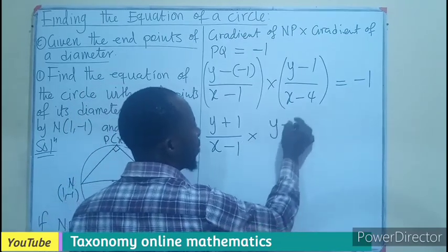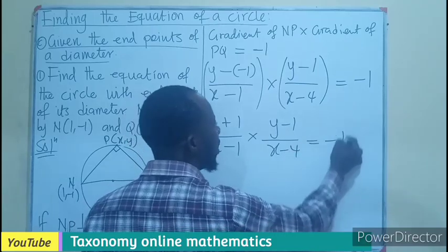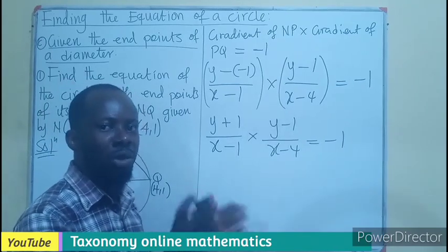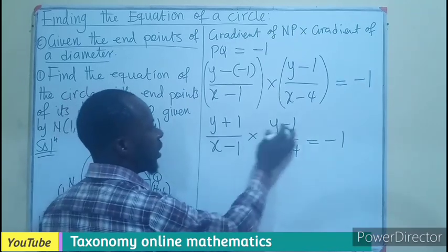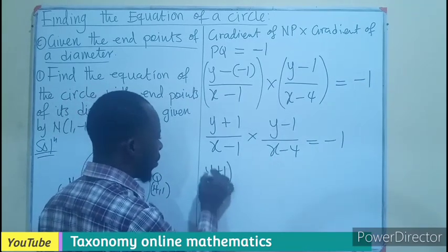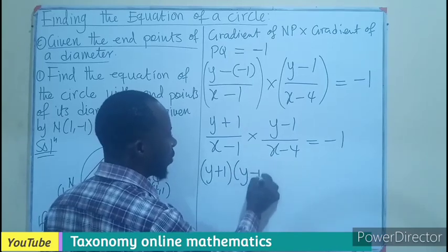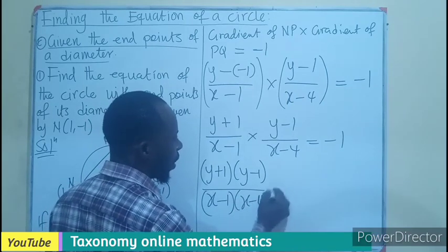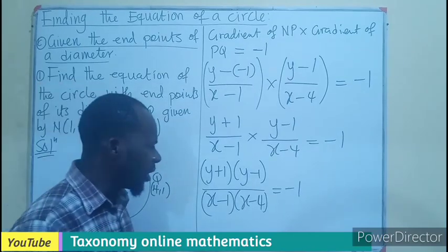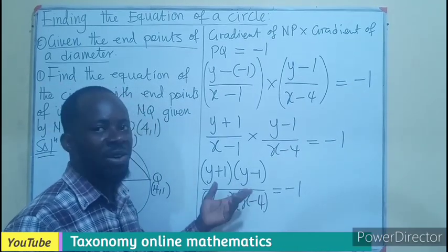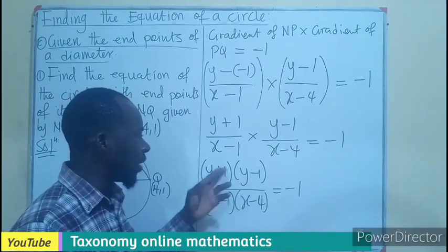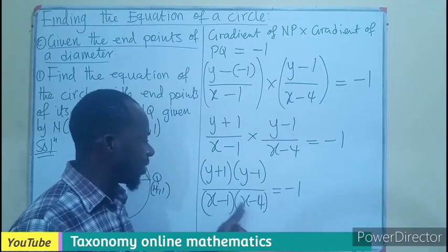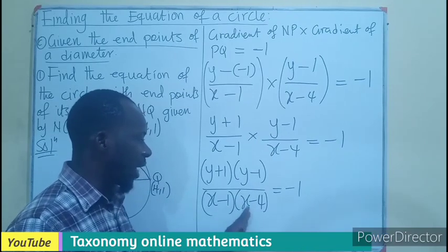So we have [(y + 1)(y − 1)] / [(x − 1)(x − 4)] = −1. Multiplying fractions means numerators multiply together and denominators multiply together. Looking at the numerator, I can see a difference of two squares: (y + 1)(y − 1) = y² − 1². For the denominator we use the FOIL method: x·x, x·(−4), (−1)·x, (−1)·(−4).